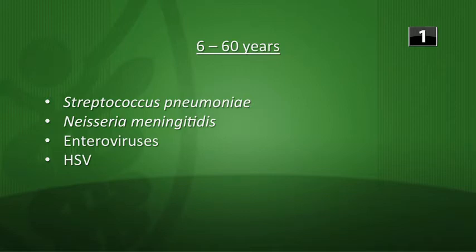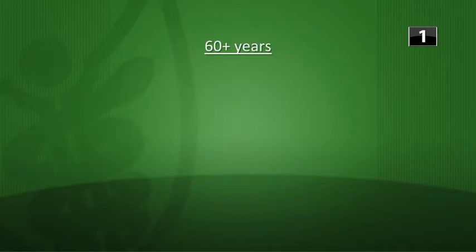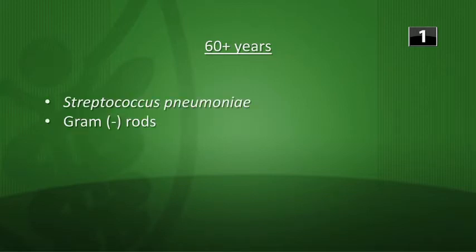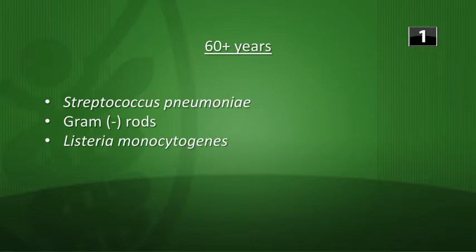Over age 60, you have Strep pneumoniae again, gram-negative rods start to show up, and Listeria. So Listeria shows up in the very young and the very old.